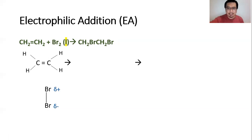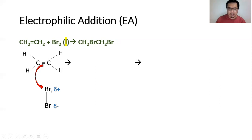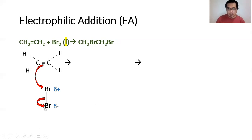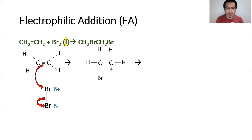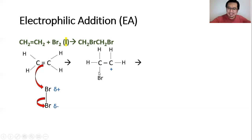Once you've done this, start the mechanism the same way as before. The two electrons in the pi bond will be used to attack the bromine with the delta positive. Since this bromine is about to bond to one of these carbons, the bromine-to-bromine bond must be broken heterolytically — both electrons are passed down to the bromine with the delta negative. A carbocation is produced again; the carbon on the right is positively charged because it is short of one electron, having used it to form the carbon-to-bromine bond.